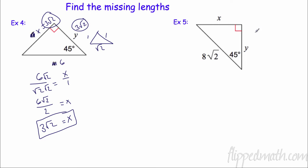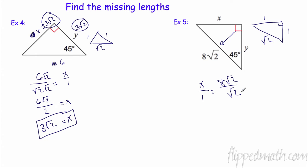Over here on example five, using the reference triangle 1 : 1 : √2, we set up x/1 = 8√2/√2. Anything divided by itself is 1, so those √2's cancel, leaving 8. So x = 8 and y = 8.